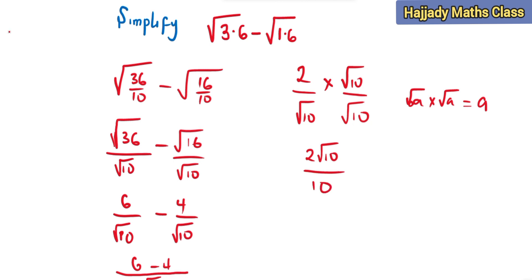So dividing this to the lowest term, we have 2 divided by 2, giving us 1 on top and 5 on bottom. So finally my answer is going to be root 10 over 5.